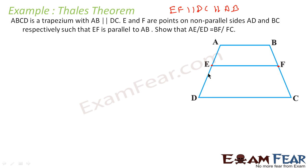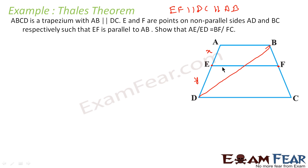We can apply the theorem only for a triangle. So if we join these two points — the diagonal — it becomes a triangle. Let us suppose AE is X and ED is Y. In triangle ABD, EO is parallel to AB — because EF is parallel to AB, that means EO is parallel to AB. So we can apply the theorem. This gives Y dash for DO and X dash for OB. So we can say Y by X is equal to Y dash by X dash.